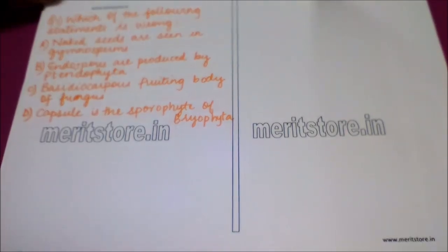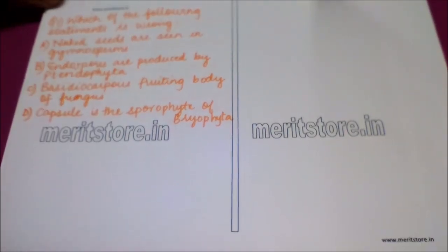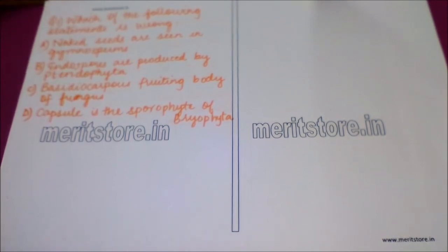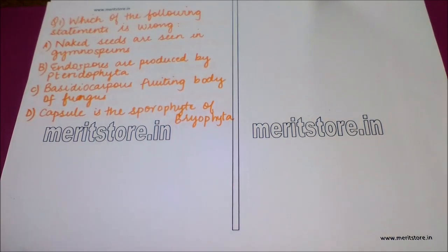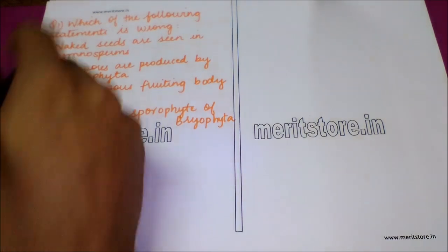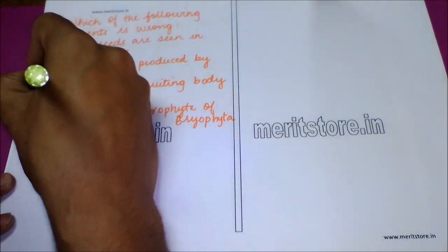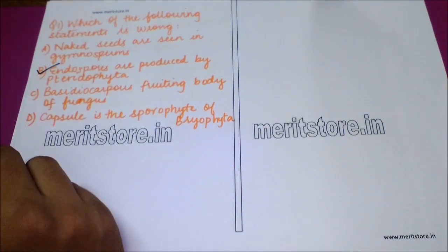The first question is: which of the following statements is wrong? Option A: naked seeds are seen in gymnosperms. Option B: endospores are produced by pteridophyta. Option C: basidiocarp is the fruiting body of fungi. Option D: capsule is the sporophyte of bryophyta. The answer is option B because endospores are not produced by pteridophyta.